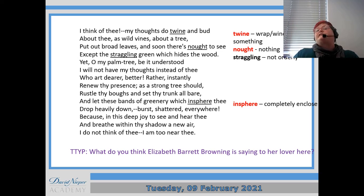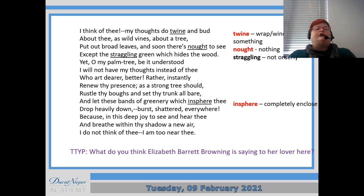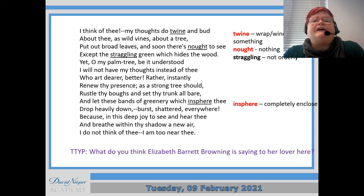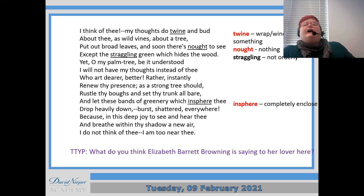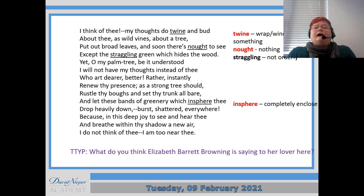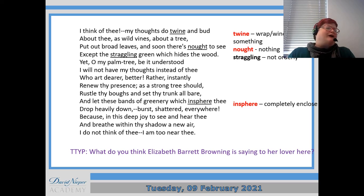So it's a very personal, very private, very sexual poem. Regarding structure: there is a rhyme scheme but it's not very obvious. The second and third lines — 'tree' and 'see' — rhyme, for example, and at the bottom of the poem we've got 'thee' and 'thee' rhyming, and then 'thee' again. So some of it rhymes but not all of it.